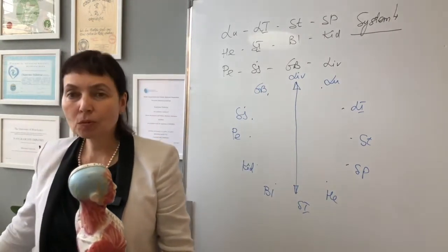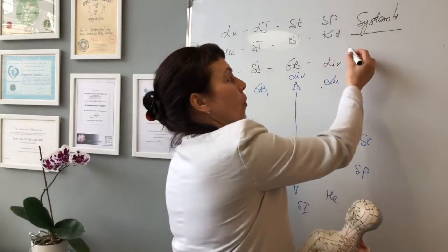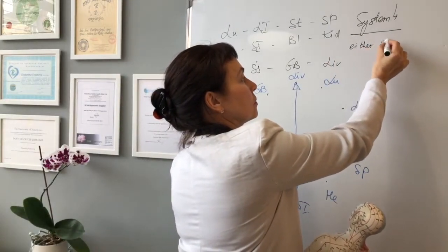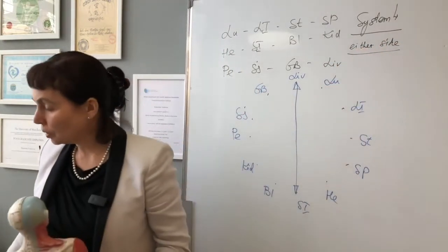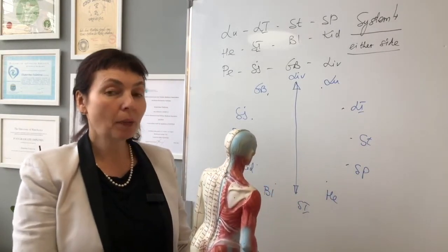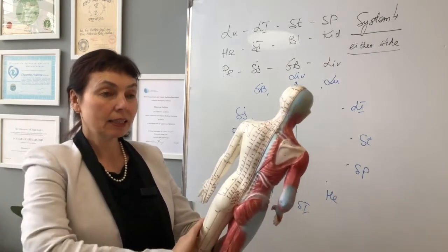This system works the same as System 2, on either side. So it will balance both branches. So the liver will balance small intestine.